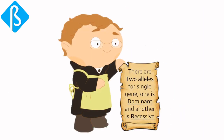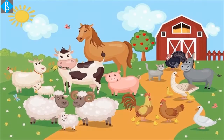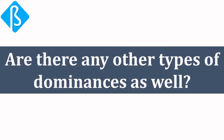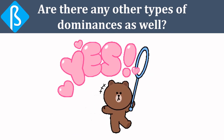Mendel said there are two alleles for a single gene — one dominant and another recessive — where one allele does everything and the other does almost nothing to determine the phenotype. But researchers said this was an oversimplification. They found some traits which were non-Mendelian, not following complete dominance. This behavior of genes beyond Mendelism is called extension of Mendelism.